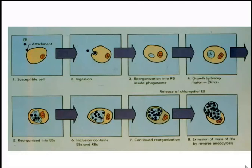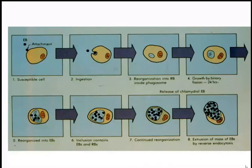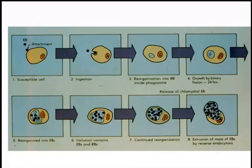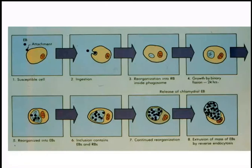These intracytoplasmic structures can be seen on microscopic examination of the prepared smear. If these intracytoplasmic inclusion bodies are found, we can confirm the infection is due to chlamydia trachomatis. The elementary bodies within the reticulate bodies form the intracytoplasmic inclusion bodies. Sometimes this structure appears to be covering or engulfing the nucleus — the larger structure is the inclusion body and the smaller one is the nucleus.